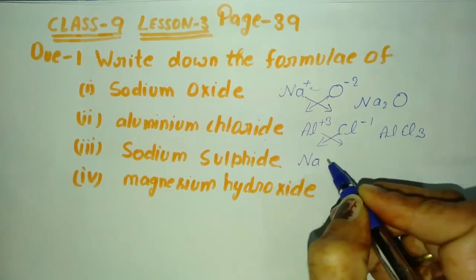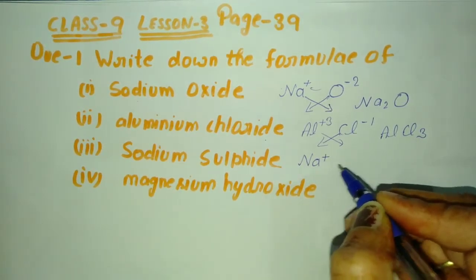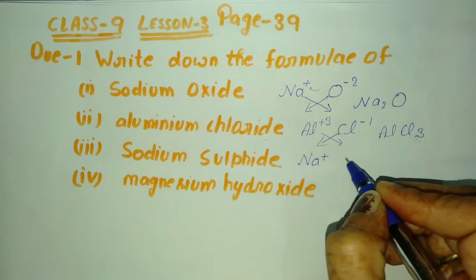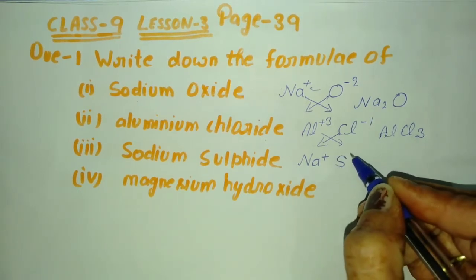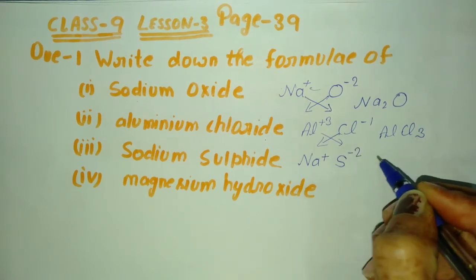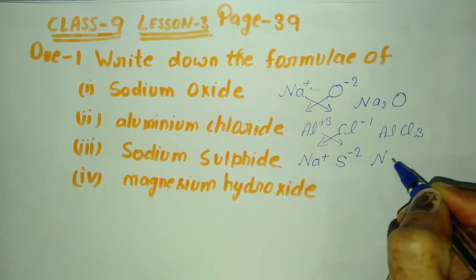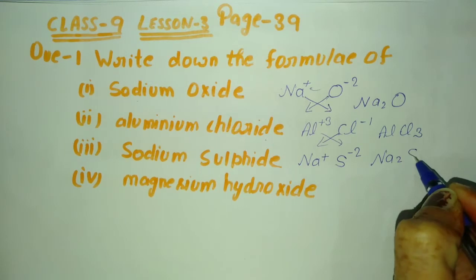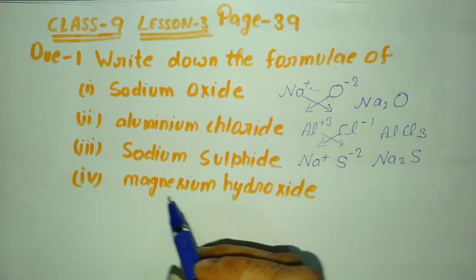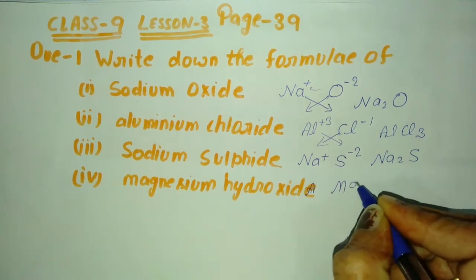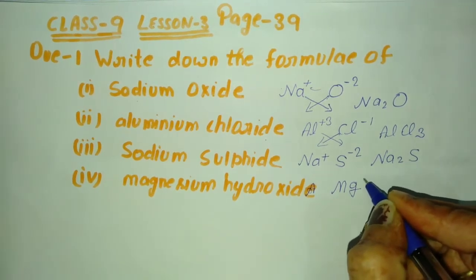Next, sodium sulfide. Sodium sulfide means sodium represented by Na, and Na has one positive charge. Sulfide means this element is represented by S, and sulfide has minus two negative charge. So this formula is Na2S.